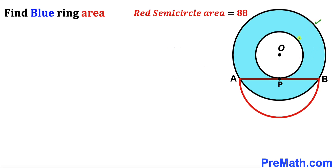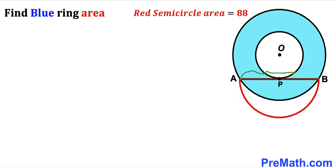In this video we have these two concentric circles with the common center O, and as a result we get this blue shaded ring. This chord AB is tangent to the smaller circle at point P. Furthermore, we have this red semicircle with its center being point P, and AB is the diameter of this semicircle. The area of this red semicircle has been given to us as 88 square units, and our task is to calculate the area of this blue shaded region.